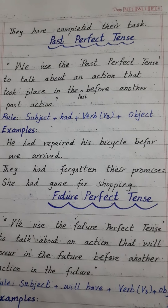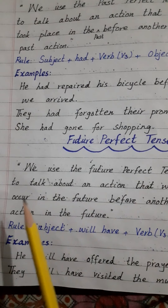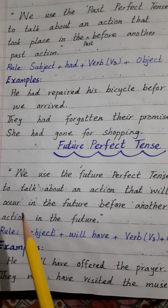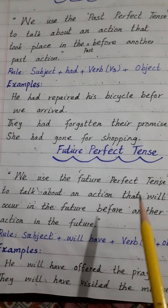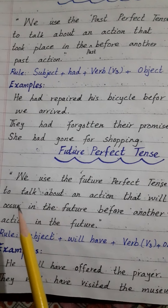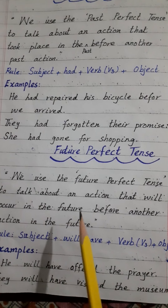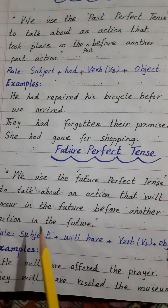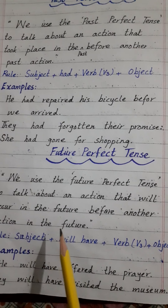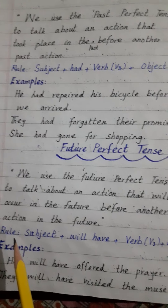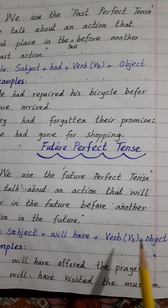Let's learn about future perfect tense. We use the future perfect tense to talk about an action that will occur in the future before another action in the future. Hum future perfect tense kab use karte hain? Jab hum kisi aise kaam ko zahir karna chahein jo ke mustaqbil mein kisi hone wale kaam se pehle mukammal hua ho. The rule of its making: subject + will have + third form of verb + object.